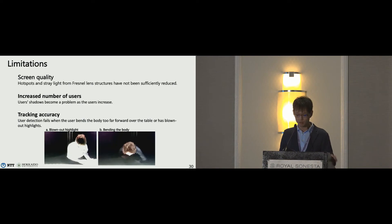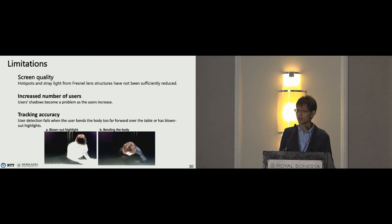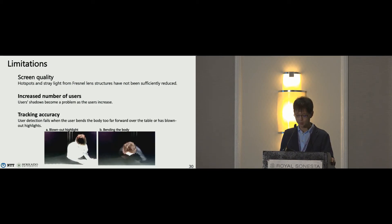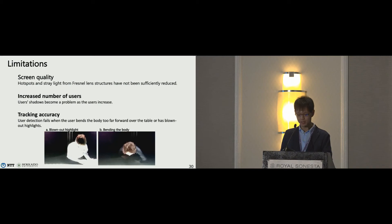This is the limitation of our prototype. First, the screen quality is not sufficient because hot spots and stray light have not been sufficiently reduced — improving screen quality is future work. Second, the number of supported users is limited, as users' shadows become a problem as more users are added; when users face each other across the display, shadows interfere with each other's observation. Third, tracking accuracy is limited — user detection fails when the user bends too far forward over the table or has blown-out highlights. We want to improve these limitations in future work.